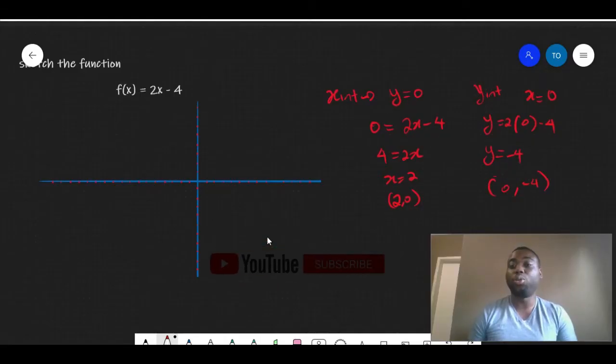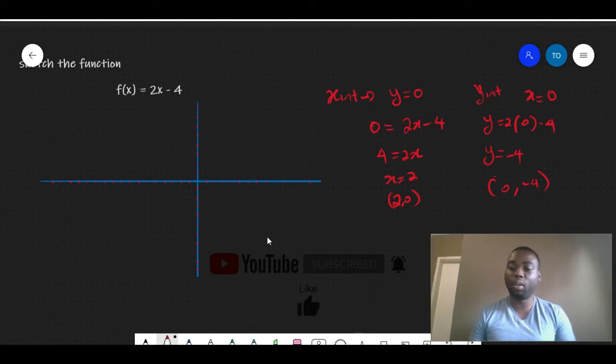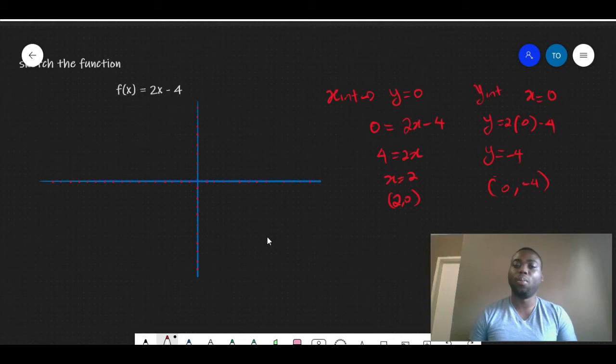Now, this is my choice. I could choose any other two points. I could substitute x as 1 and get the corresponding y-value. I could substitute x as 2 and also get the corresponding y-value. But I prefer to use this and I'm going to stick to it. So it doesn't matter whichever you choose.